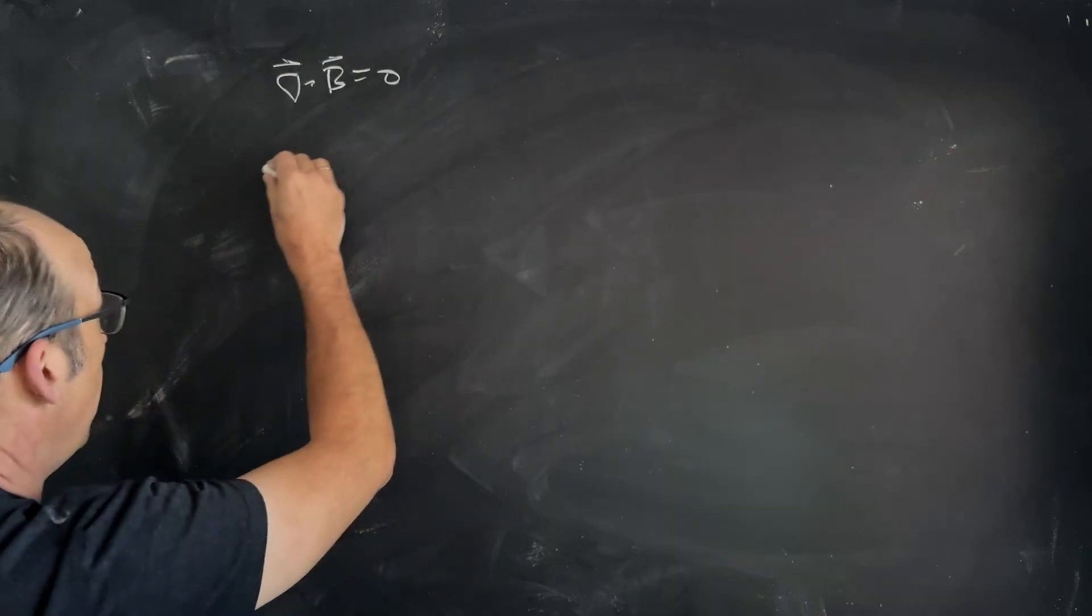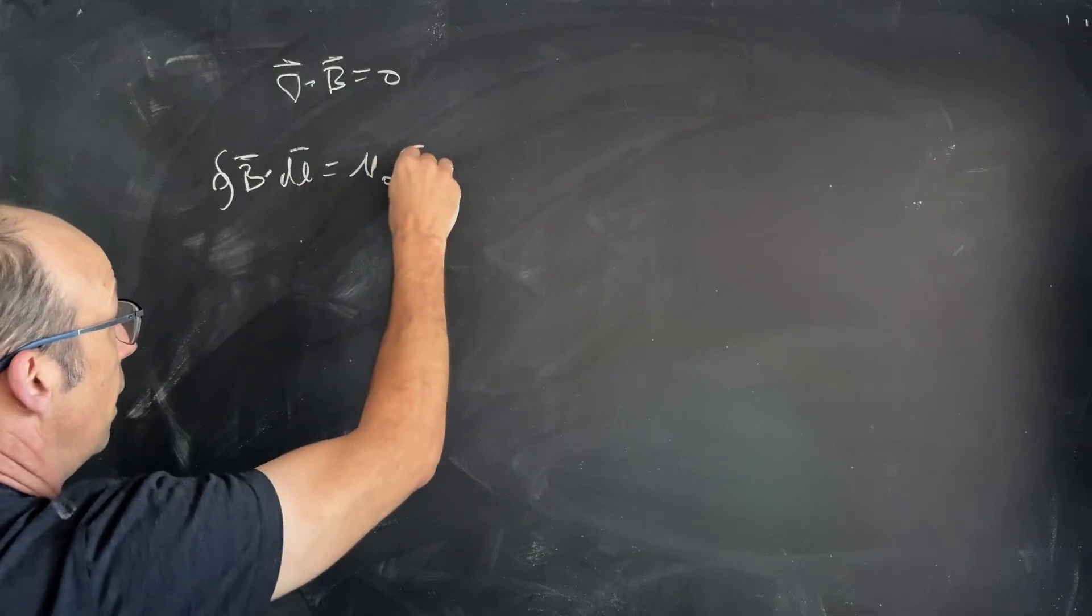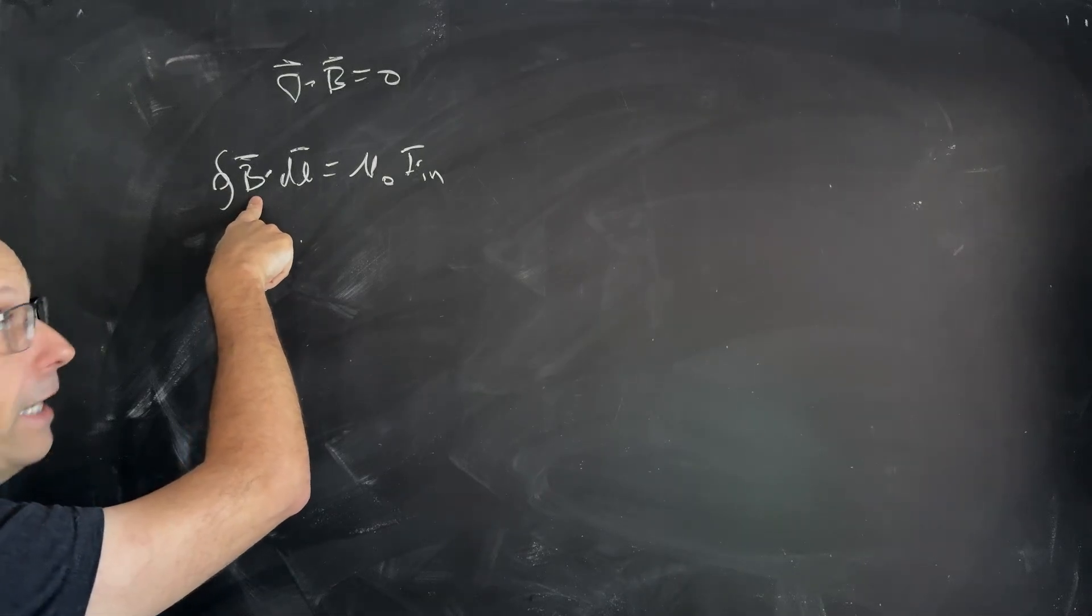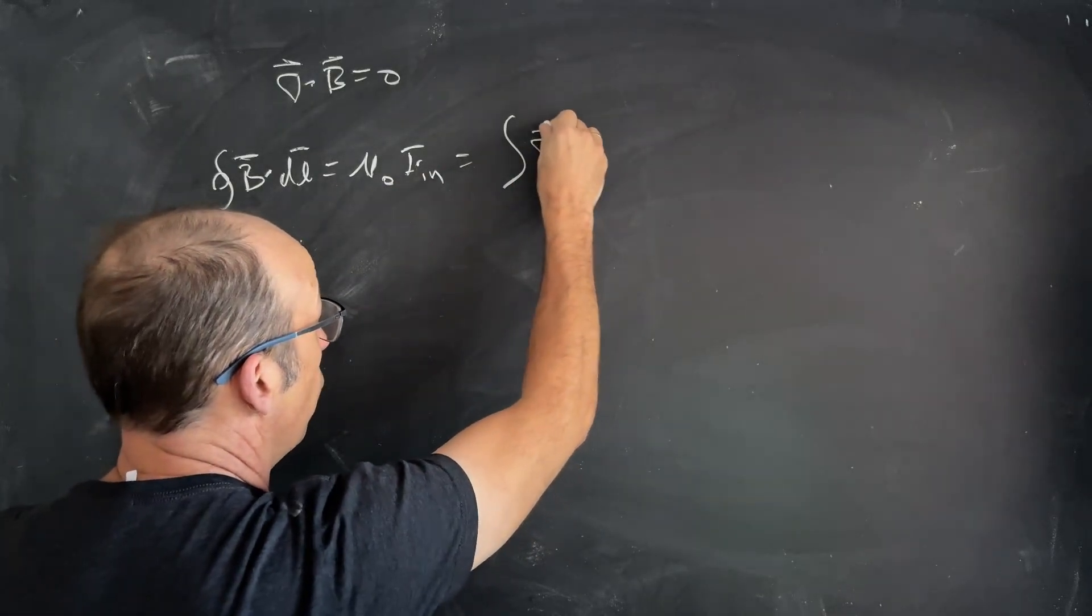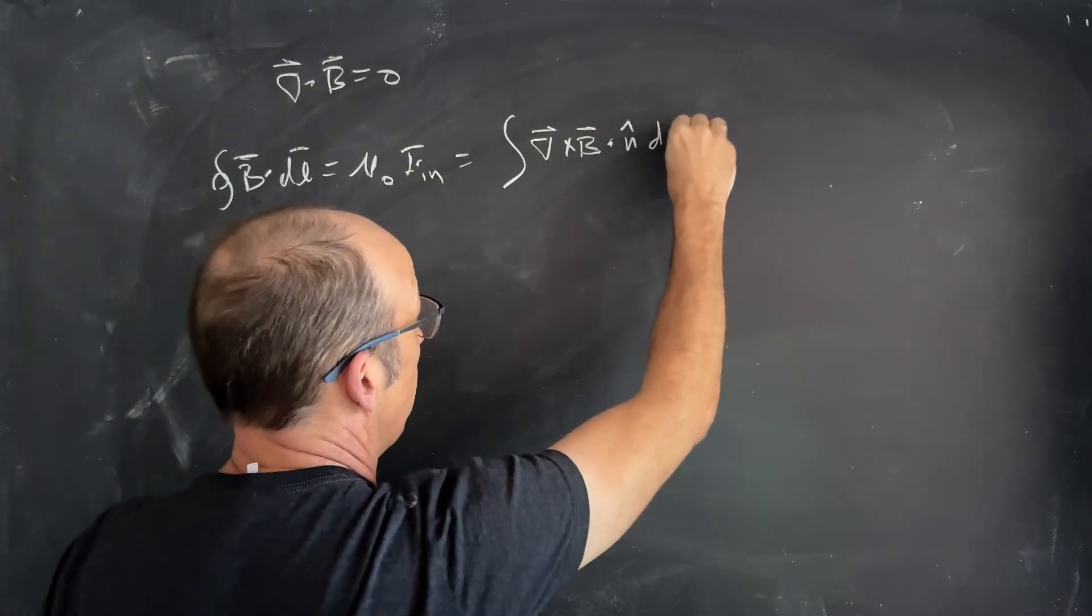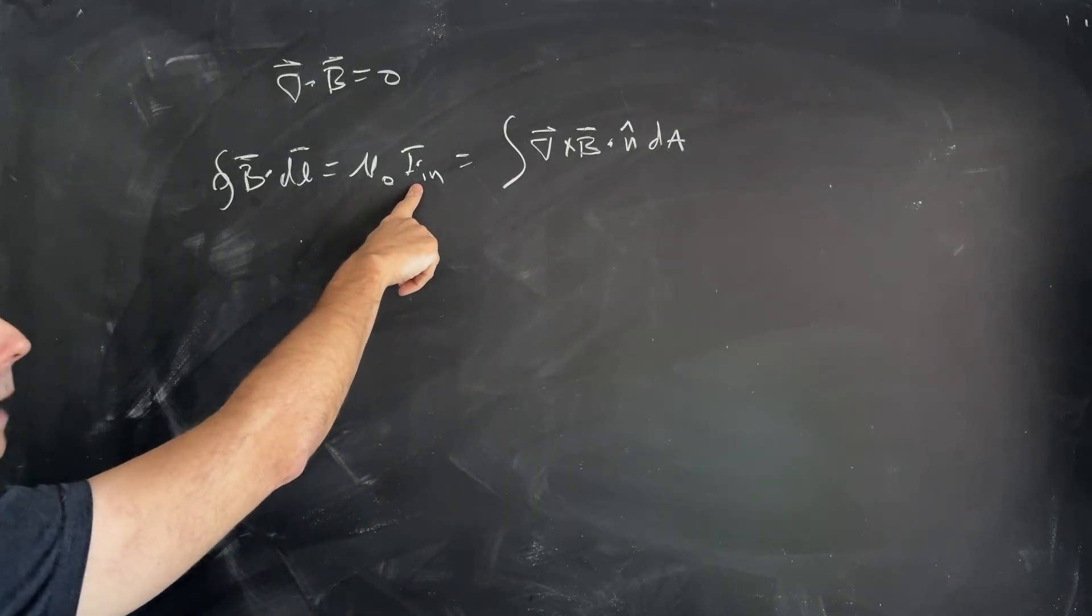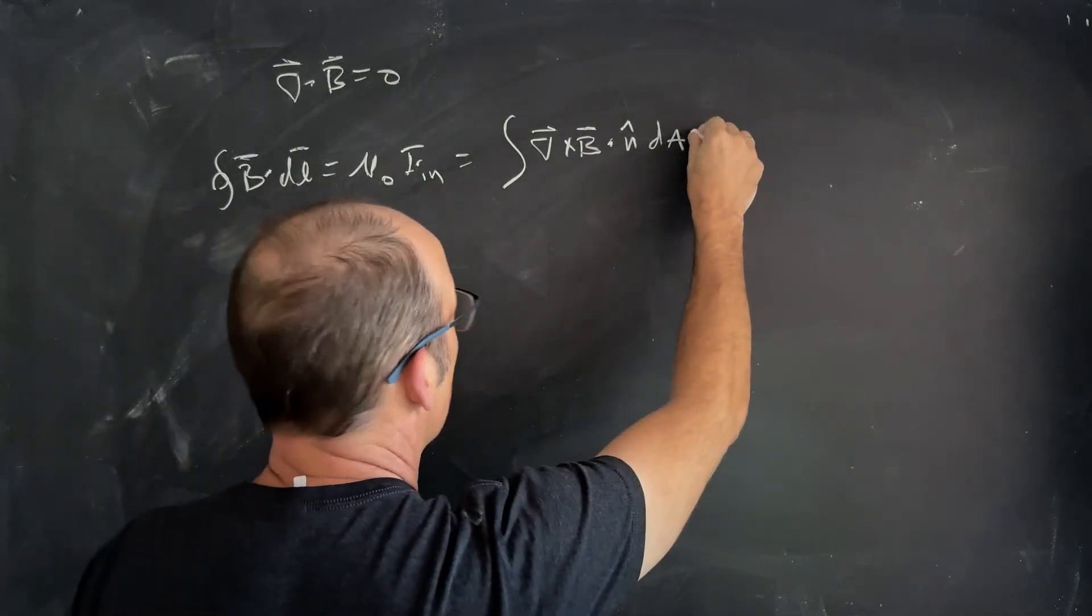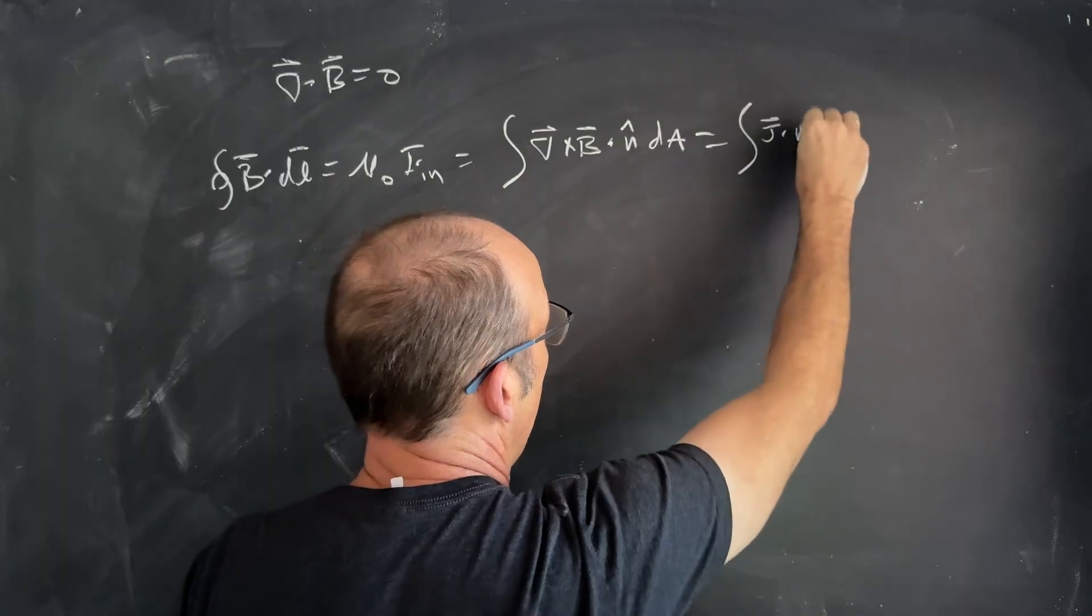Now, we write Ampere's Law as B dot DL is mu naught I enclosed. Stokes' Theorem says that the closed path integral of a vector field is equal to the surface area bounded by that same thing of the curl, the flux of the curl. Del cross B dot N hat D A. That's Stokes' Theorem. I can write the total current passing through this surface bound by that as a surface integral too. I can say this is equal to the integral of the current density dot N hat D A.